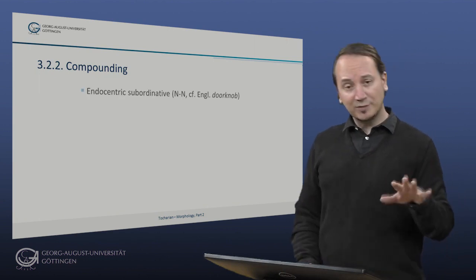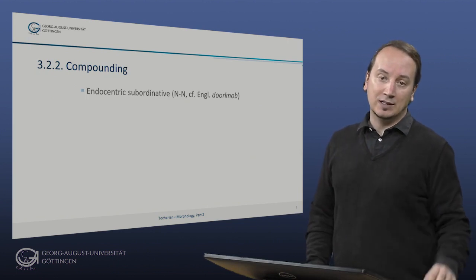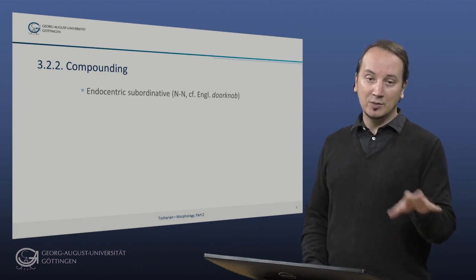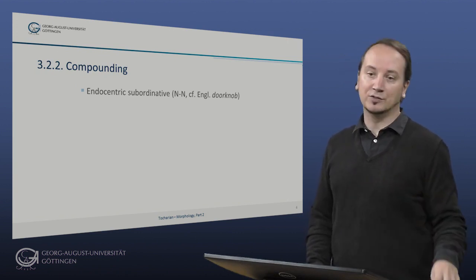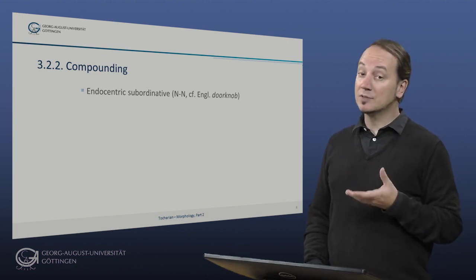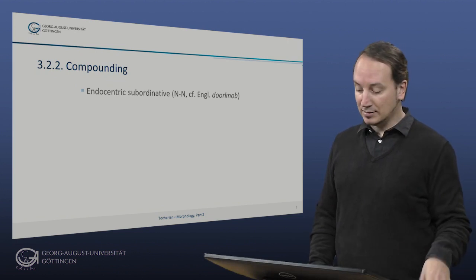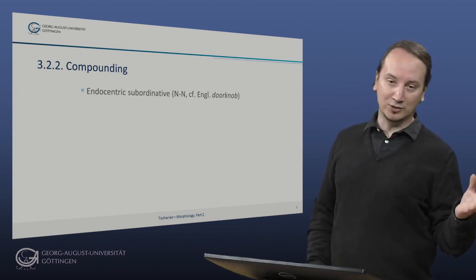So first we have a look at endocentric subordinative compounds. Subordinative in this context means that there is a syntactic relation of complementation between the head and the non-head of the compound. For noun-noun compounds this means that the constituents of the compound are linked by an of relation like English doorknob, so a knob of a door.